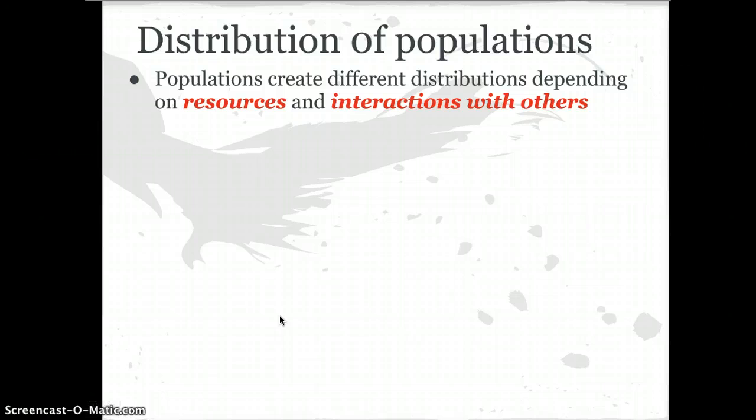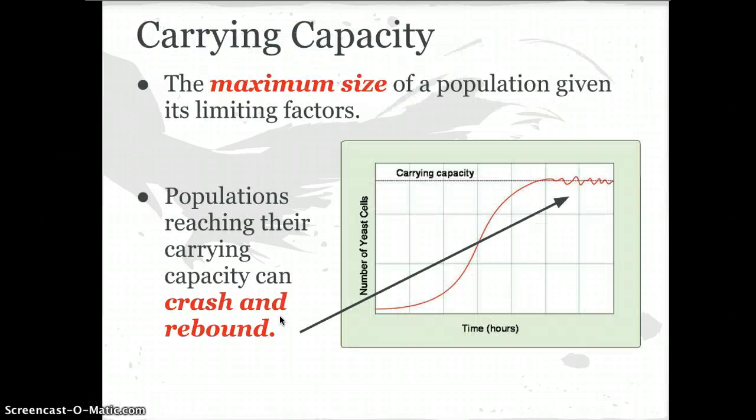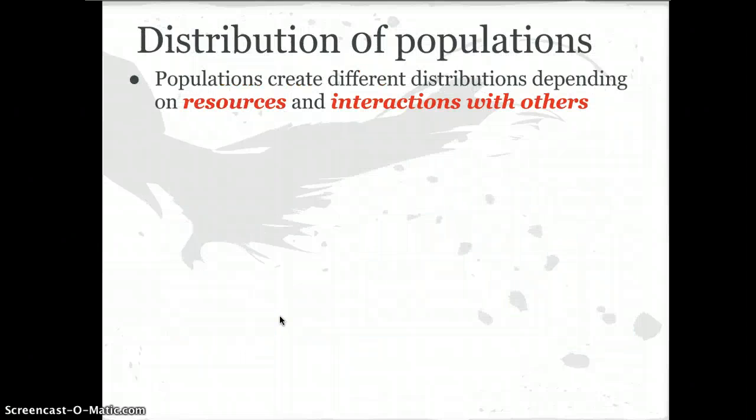It's also good to know how populations distribute themselves in the environment. We saw that population size reaches a certain point; now we'll look at how populations distribute themselves spatially. Populations create different patterns depending on their resources or their interactions with others.